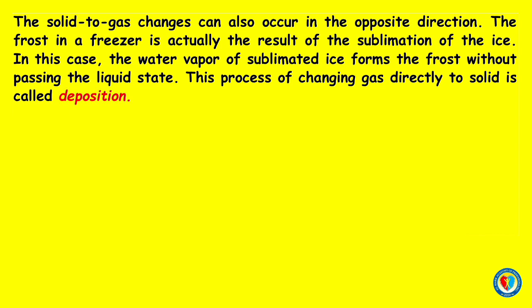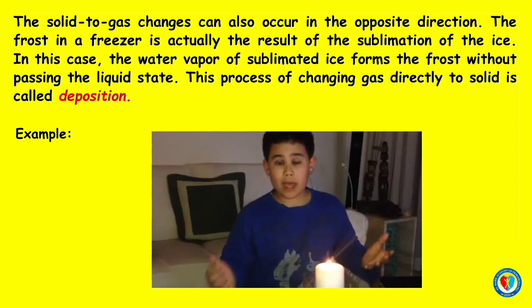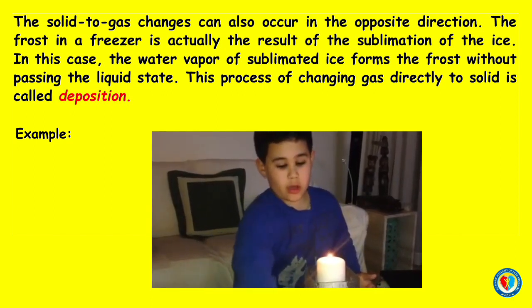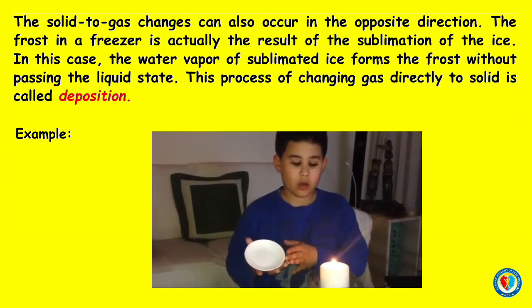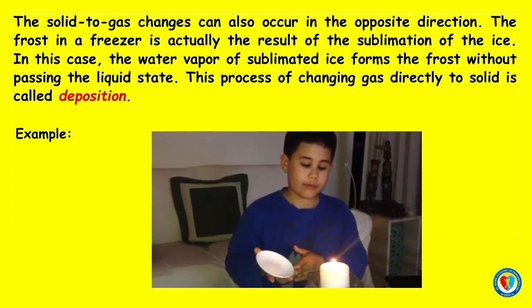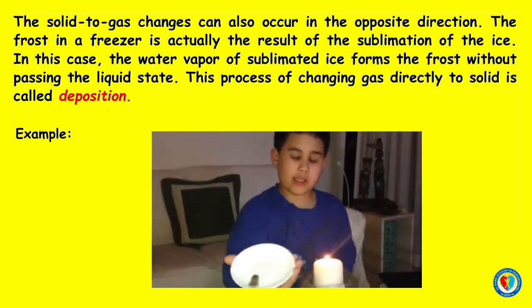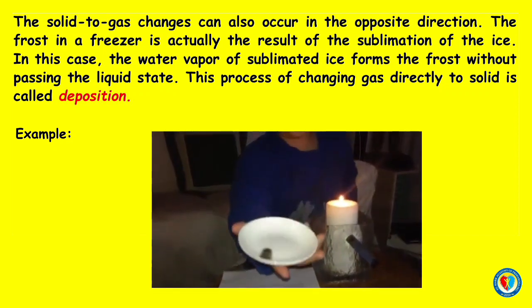The solid to gas change can also occur in the opposite direction. The frost in a freezer is actually the result of the sublimation of the ice. In this case, the water vapor of the sublimated ice forms the frost without passing the liquid state. This process of changing gas directly to solid is called deposition. So if the flame receives less oxygen, we can make a solid called carbon. We're going to make less oxygen using a plate on top of the flame. As soon as we place the plate into the flame, it will create a black soot. As you can see, it has made a very dark soot and that is actually a solid.